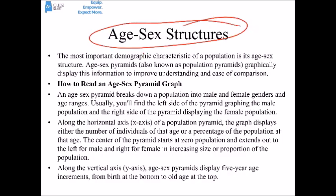Let's also talk about age-sex structures, also called age-sex pyramids. These graphically display a population by breaking it down into males and females and the number present at each age range. Usually the left side graphs the male population and the right, the female population. The x-axis displays the number of individuals or percentage of the population at a particular age. Along the vertical y-axis, ages are displayed in five-year increments from birth at the bottom up to old age at the top.